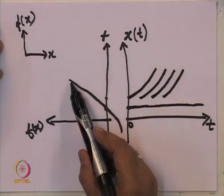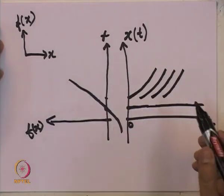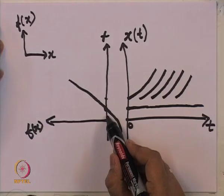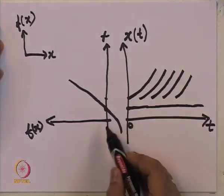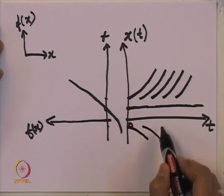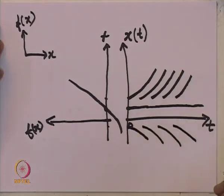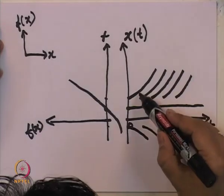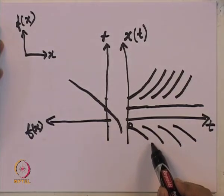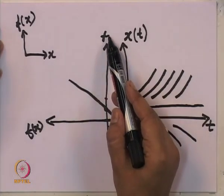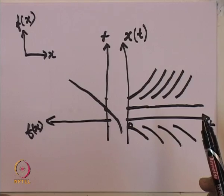On the other hand, if we start with a value of x slightly below this equilibrium point, then x-dot is negative, so x is going to decrease with time. The dependence of f with respect to x tells us how x depends on t — whether x is increasing or decreasing depends on whether f is positive or negative as a function of x. We will see this in more detail with an example.